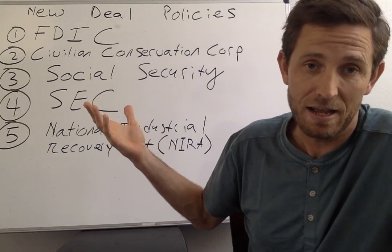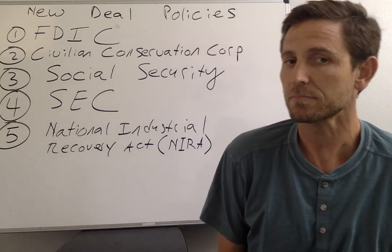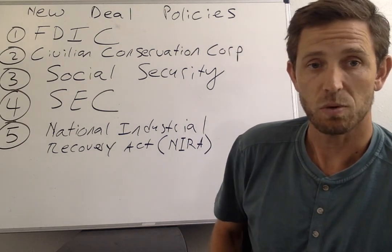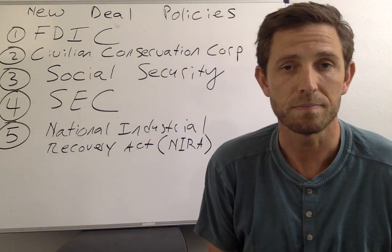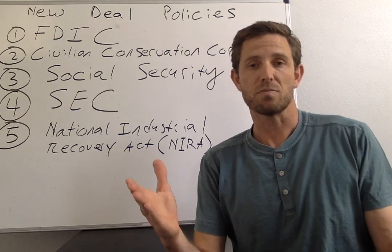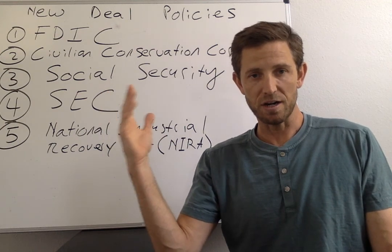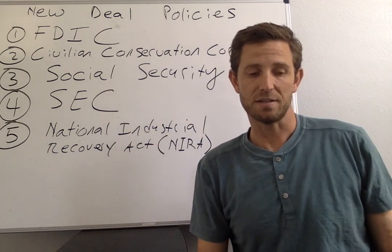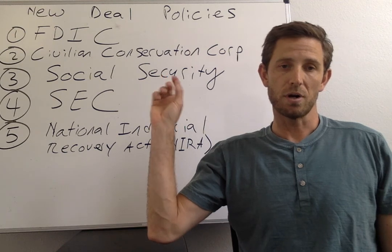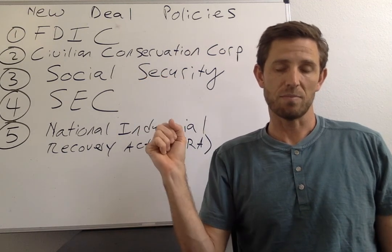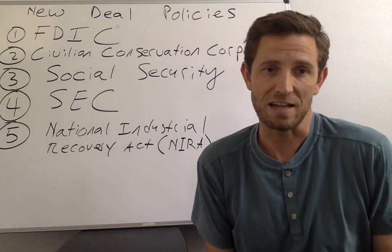Since the FDIC was established, we have not had bank runs, and this is largely viewed now as a really successful reform. Next, we also saw the creation of the Civilian Conservation Corps. During the Great Depression we saw unprecedented levels of unemployment — as high as 25 percent — with many many people unable to find a job. The Civilian Conservation Corps stepped in to address that problem, with the government serving as an employer of last resort.